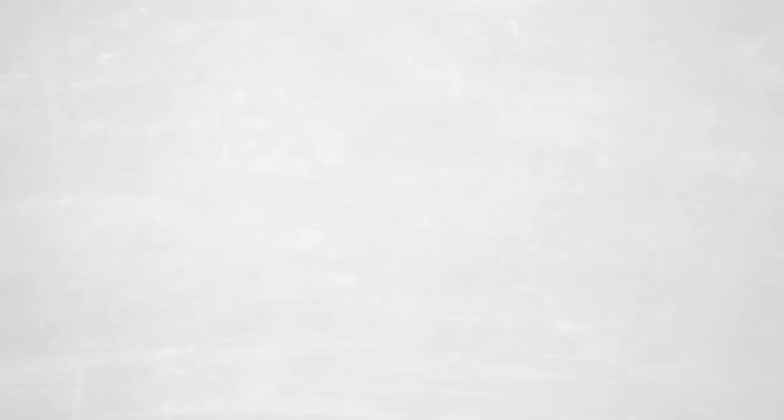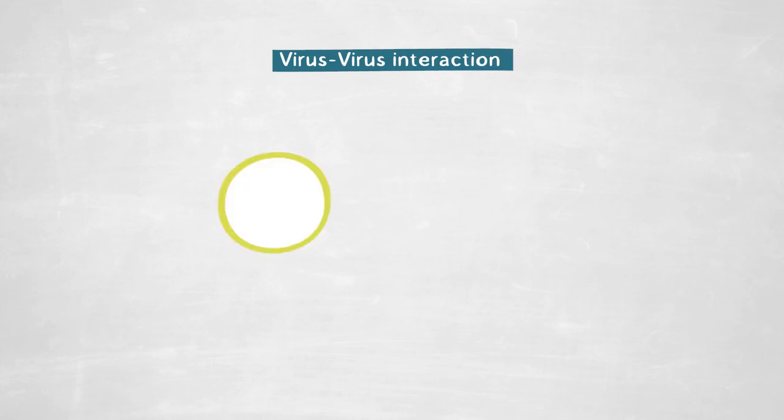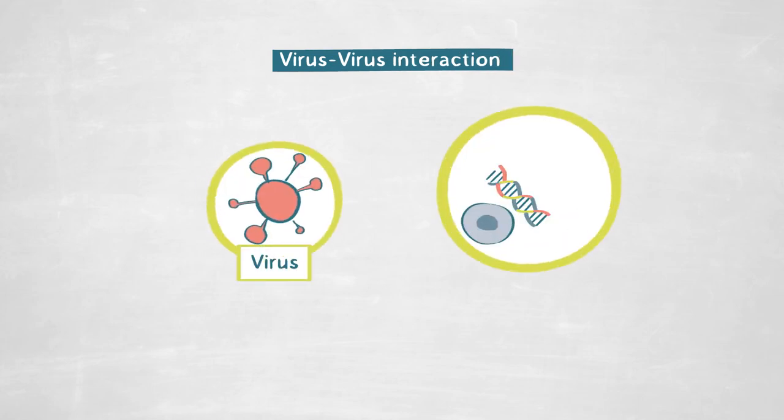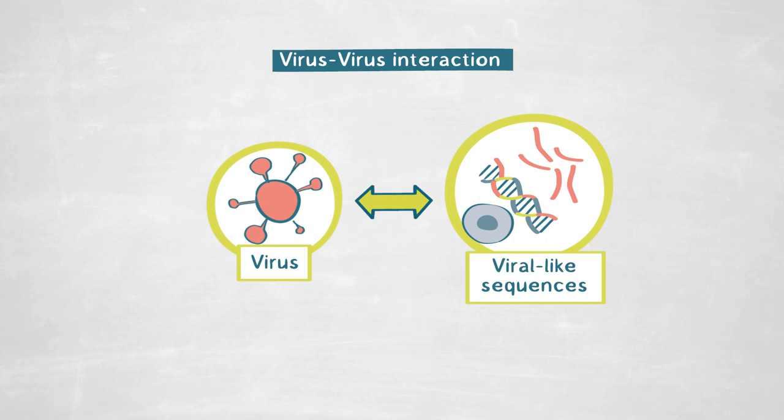Even more interestingly, we discovered that the outcome of the infection heavily depends on virus-virus interaction between the infecting virus and the viral-like sequences already present in the host. This opens a whole new dimension that needs to be studied to understand virus-host interaction, because these viral-like sequences represent a positive trait for the host, allowing them to establish a coexistence where both virus and host can reproduce and profit.